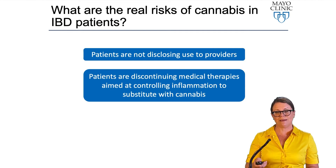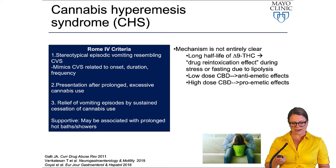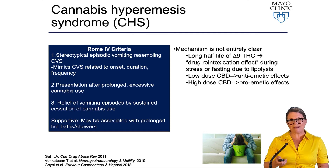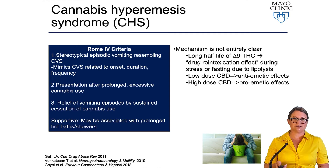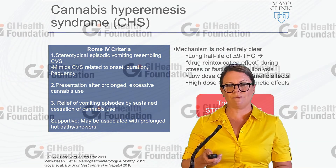Cannabis hyperemesis syndrome now has criteria under the Rome 4 guidelines. It is characterized by stereotypical episodic vomiting resembling cyclical vomiting syndrome, occurring after prolonged excessive cannabis use, with relief upon sustained cessation of cannabis. There is some supportive evidence that hot showers may also provide relief. The treatment is to stop using cannabis, but this can be difficult to convey to patients who have a history of chronic excessive use.